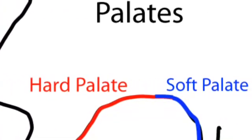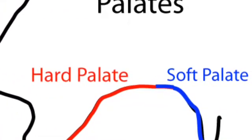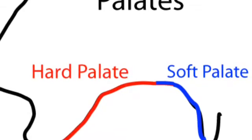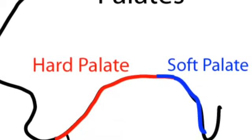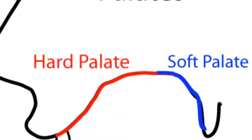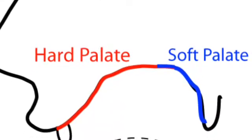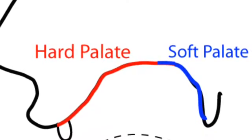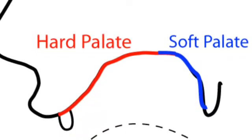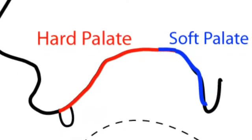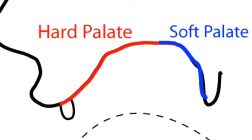Both the hard and soft palates help with speech. The hard palate is located on the top of the mouth at the front, dividing the nasal passages. The soft palate is located on the top of the mouth at the back, closing the nasal passages during the process of swallowing.